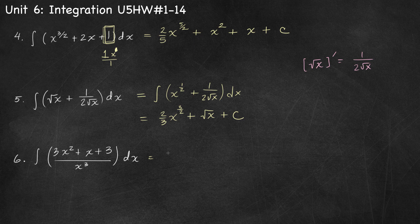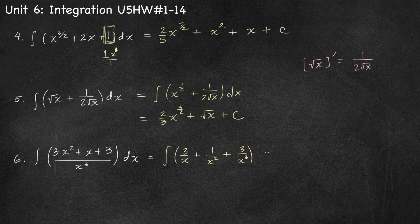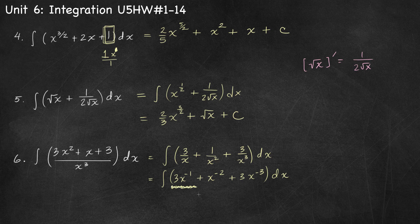Number 6, we want to simplify before integrating. Dividing 3x squared by x cubed gives 3 over x; x over x cubed gives 1 over x squared; and 3 over x cubed stays. We rewrite as 3x to the negative 1 plus x to the negative 2 plus 3x to the negative 3. For 3x to the negative 1, we can't use the power rule — it would result in dividing by 0 — so we use the fact that the derivative of ln x is 1 over x. The antiderivative of 3 times 1 over x is 3 ln|x|.